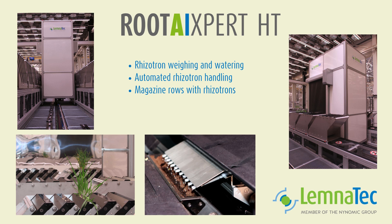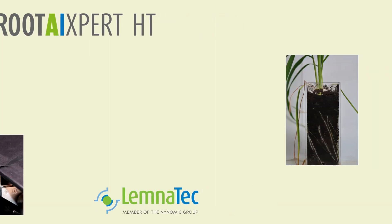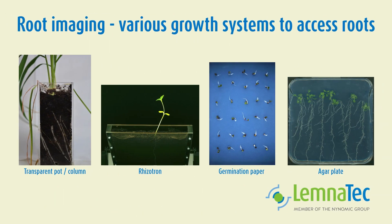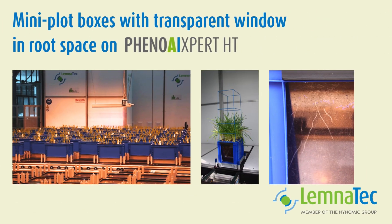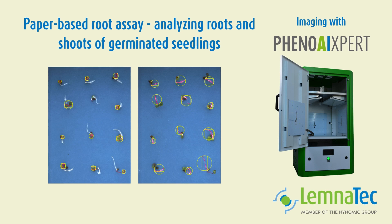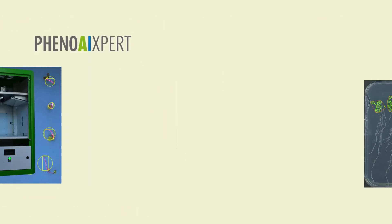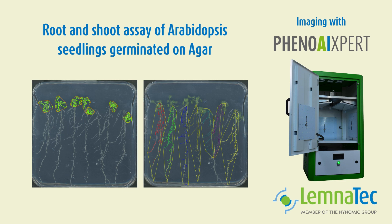Beyond flat RISOTRONs, there are other ways to display roots for analysis — for instance, transparent pots, roots on paper, or in EGA plates. In this example, miniplot boxes with a transparent window in the root space are imaged on a PhenoExpert HT. A PhenoExpert is also used to image paper on which seedlings have been germinated, and roots can be analyzed. Similarly, this can be done for plants germinated on EGA plates.